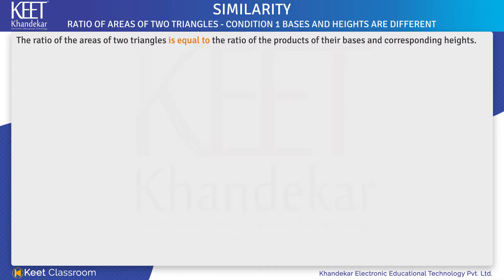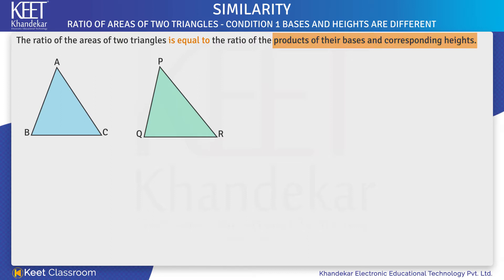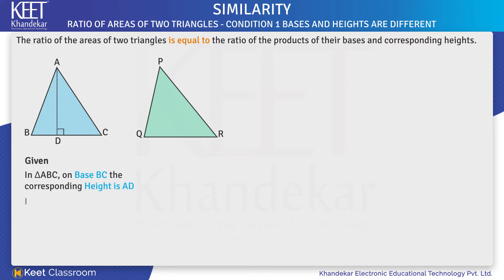Let us prove this statement. On analyzing the statement, the first part is the ratio of areas of two triangles. Let the two triangles be triangle ABC and triangle PQR as shown on the screen. The second part is the product of their bases and corresponding heights. In triangle ABC, on base BC, the corresponding height is AD. And in triangle PQR, on base QR, the corresponding height is PS.